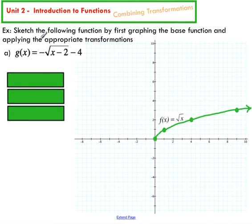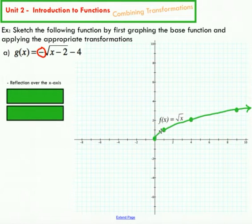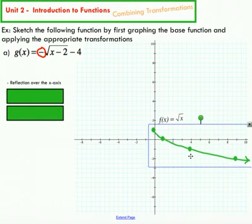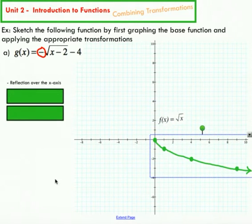However, the first thing I see reading my function from left to right is that I have a negative in front. Remember, that tells you that you're going to reflect your graph over the x-axis. Picture this graph being flipped over the x-axis so it's in the negative quadrant. I have a handy flip feature on this program that allows me to do that quickly. You can see I've flipped my graph over the x-axis compared to where the original graph was.